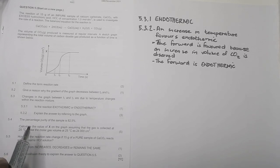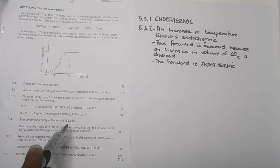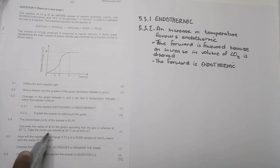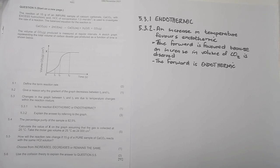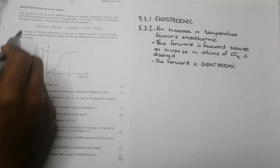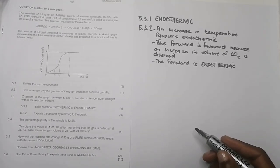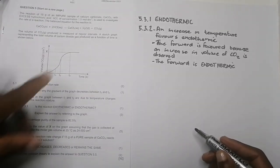The next question states the percentage purity of the sample is 82.5%. They ask us to calculate the value of x on the graph, assuming the gas is collected at 25°C, and to take the molar volume at 25°C as 24,000 cm³. We need to find the actual amount of calcium carbonate — since it was the limiting reagent — and from there calculate the volume using stoichiometric ratios.